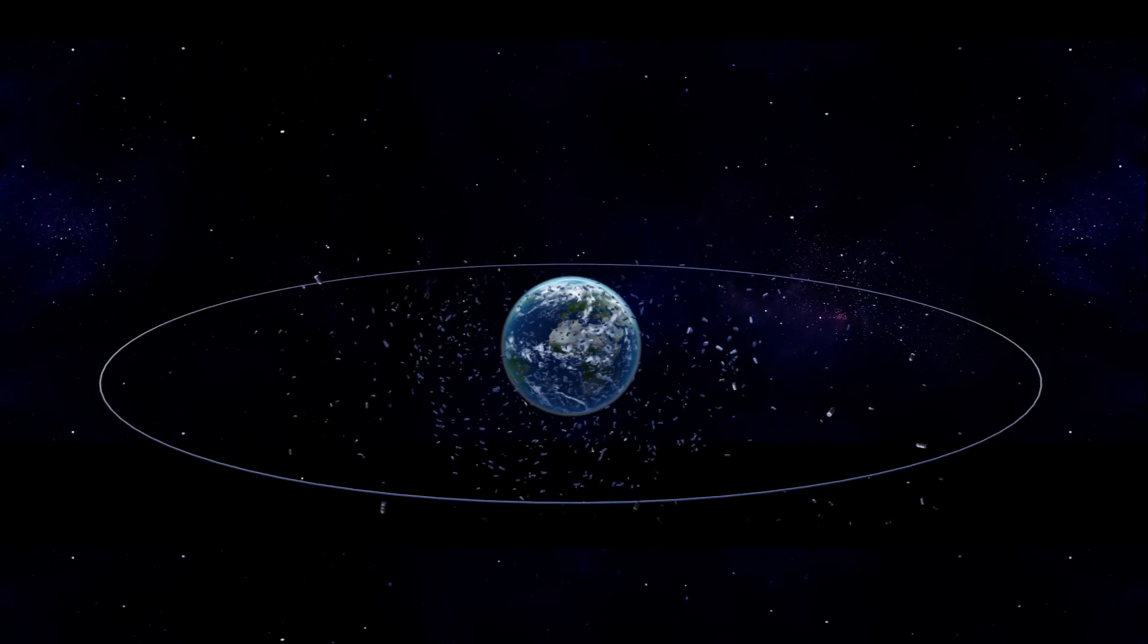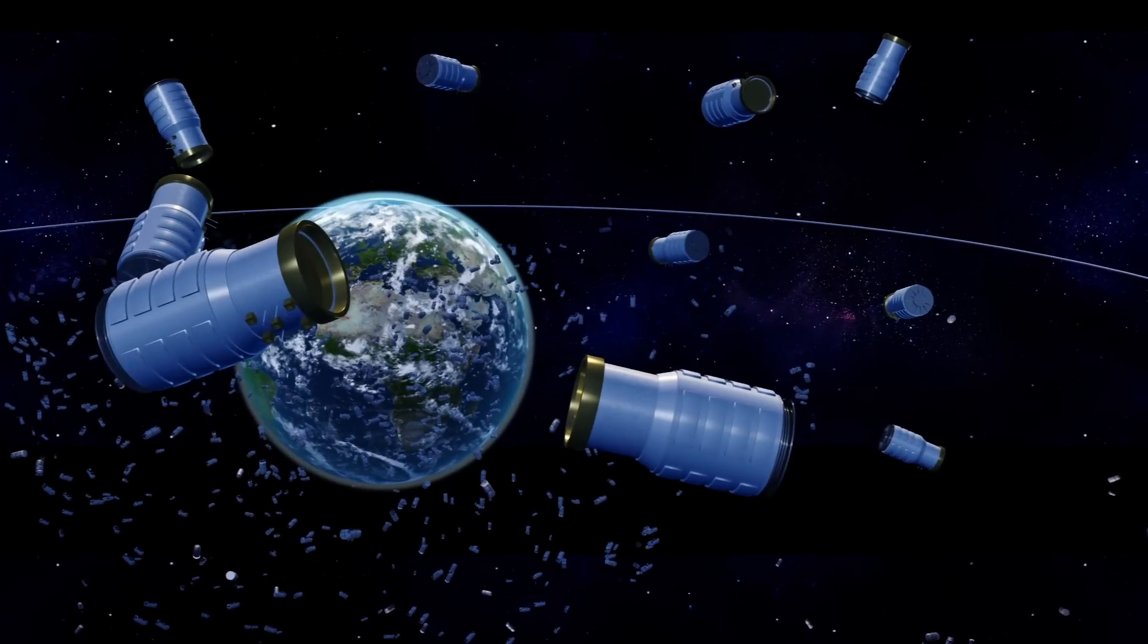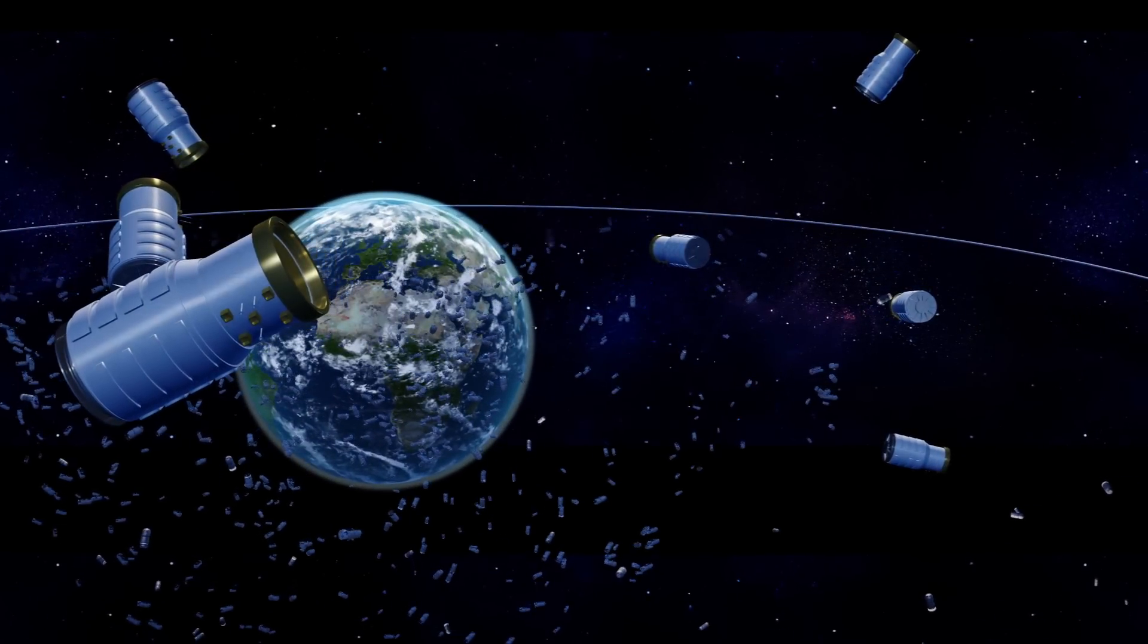The method would only work on the roughly 1,200 objects of space junk in a geostationary orbit above the Earth. GLIDER could remove roughly three objects a year.